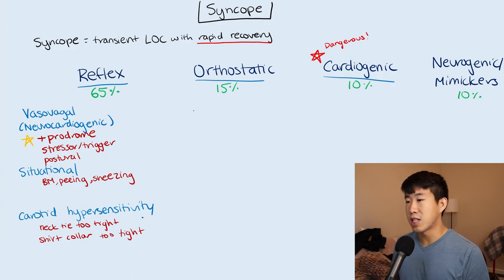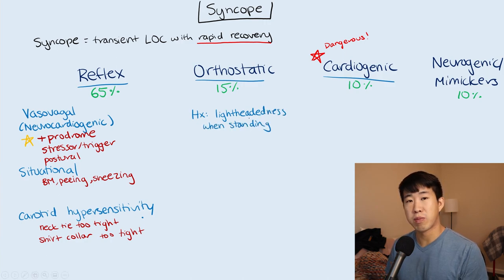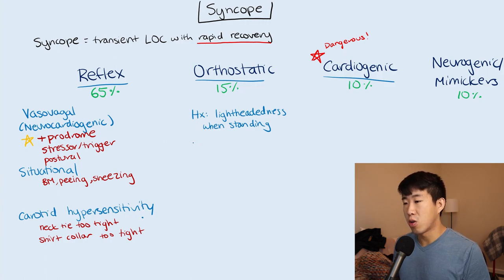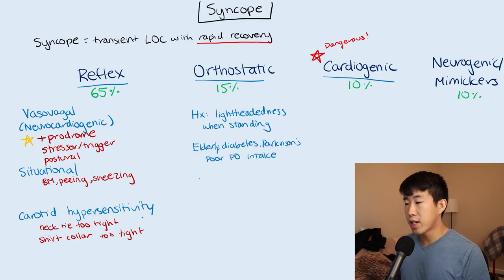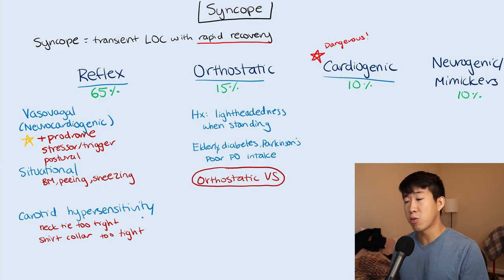Orthostatic hypotension is very much history-driven. The patient usually reports lightheadedness when standing up, with a history of poor oral intake, nausea, or not drinking enough fluid — they look dehydrated on exam. This also occurs in older patients who develop autonomic dysfunction, including those with diabetes and Parkinson's disease. The way to diagnose this is with orthostatic vital signs, which should be obtained in any patient presenting with syncope since they're easy and cheap to get.